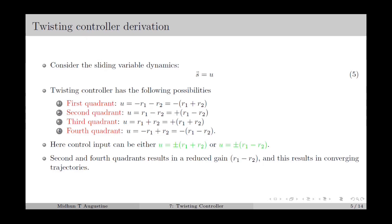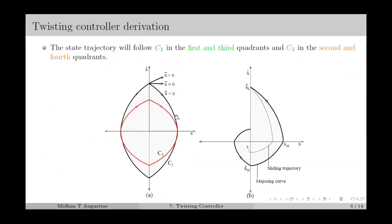From the bouncing ball example in the previous lecture, we observed that in the case of a double integrator with a negative input, the state trajectory will be a parabola. Similarly, for a double integrator with a positive input, the state trajectory will be a parabola in the other direction. Here we consider the s versus s-dot plot, with s-double-dot greater than zero and s-double-dot less than zero, corresponding to a double integrator with negative and positive inputs respectively. In the case of the twisting controller, we have four different values of the input — two are negative values and two are positive values.